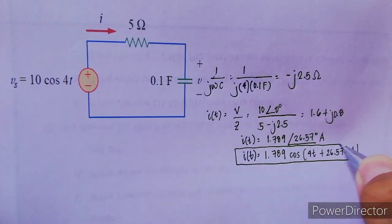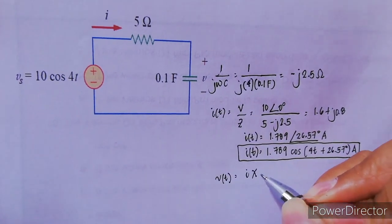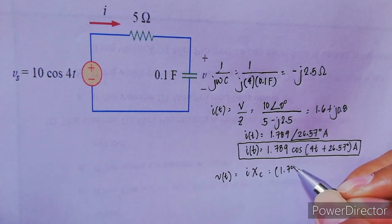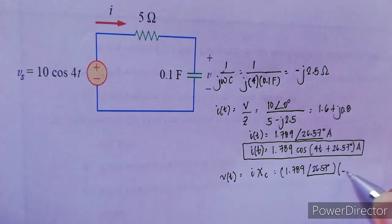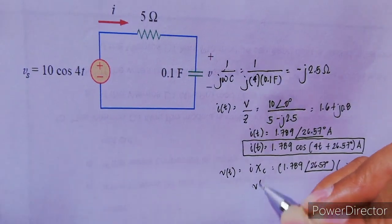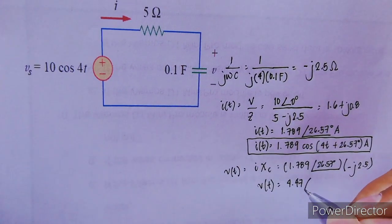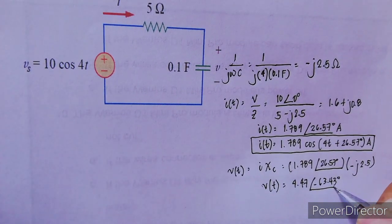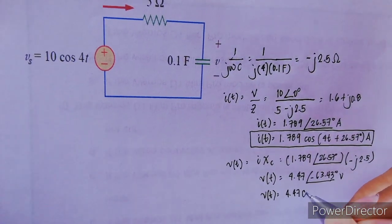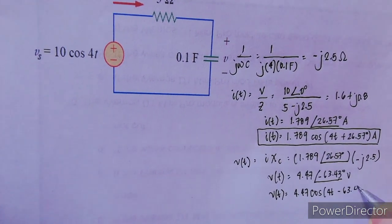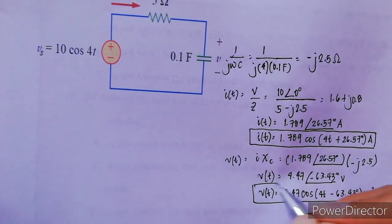Don't forget the units. To find the voltage drop across the capacitor, V(t) is simply the current multiplied by the capacitive reactance X_C: 1.789∠26.57° × (−j2.5) = 4.47∠−63.43° V. In time domain: V(t) = 4.47 cos(40t − 63.43°) V. As you can see, the current leads the voltage by 90 degrees when you look at the phase angles.